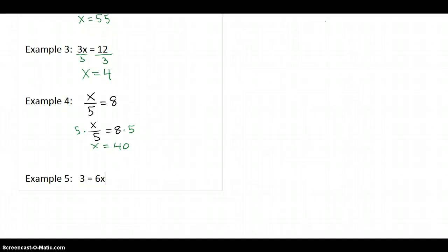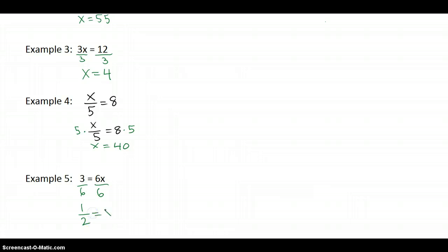Here's a tricky one that students sometimes get wrong. On this question, a lot of people say, "Oh, okay, I see what she's doing — she's taking the left number and dividing." Well, no. This is 6 times what number, so you want to get x alone. Instead of dividing by 3, you've got to divide both sides by 6. So the answer is not 2 — it is one half, because 3 over 6 is one half. So that gives you five one-step equations.